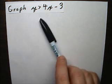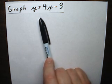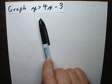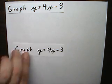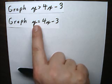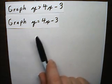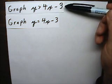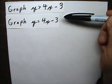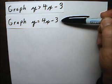The graph of this is going to be an entire half plane. The first step is to graph y equals 4x minus 3. This is going to be the boundary of the half plane. And the graph of this is going to be everything either to the right or the left of this line.